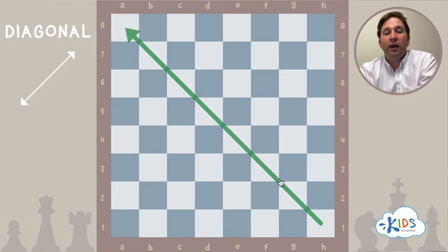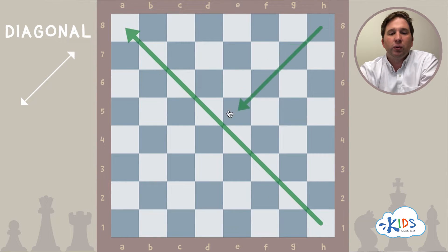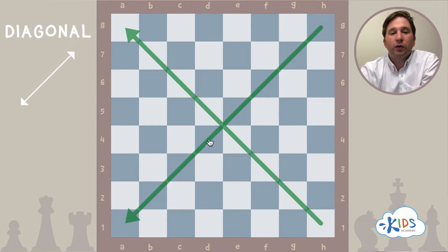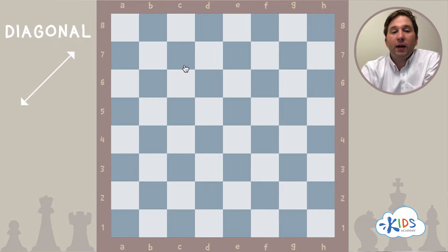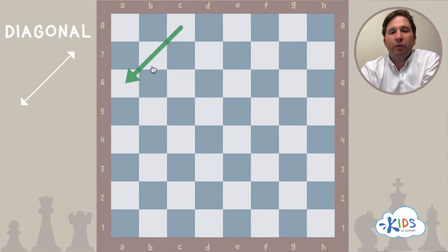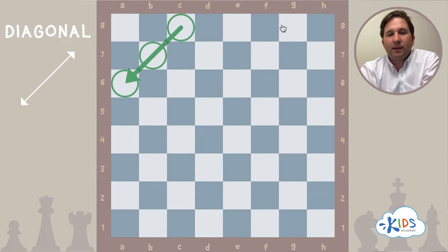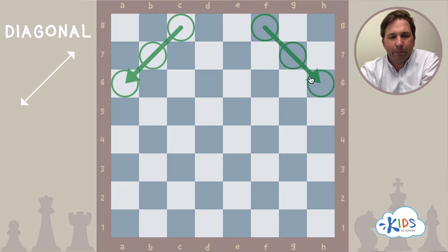Here we have a very long diagonal made up of eight squares, and in fact there are two long diagonals on a chess board — one on the light squares, one on the dark squares. There are also many other diagonals. Here's a short diagonal made up of three squares: one, two, three. And here's a short diagonal on the dark squares: one, two, three.